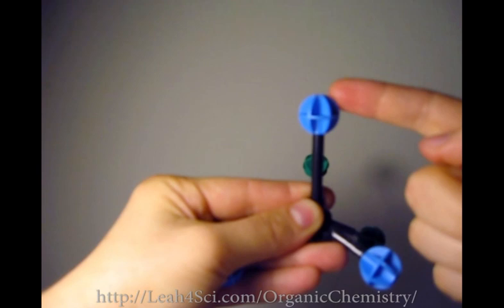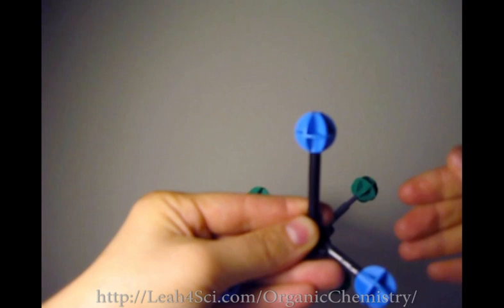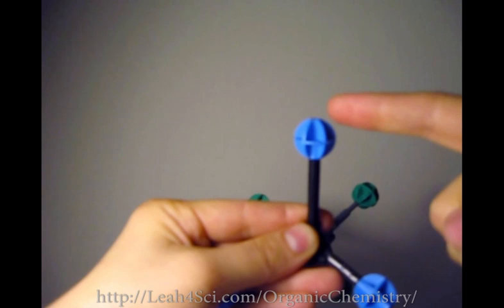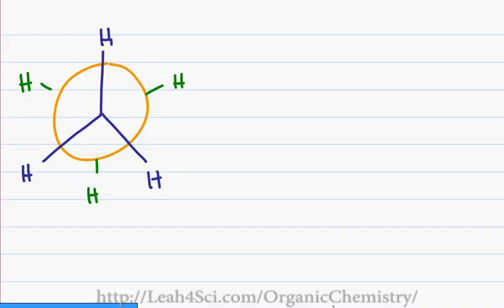Because this is ethane, the eclipsed and the staggered conformations are all going to be the same because it's hydrogen, gauche to hydrogen and in this case I have hydrogen eclipsing hydrogen. Now let's see this on the screen.